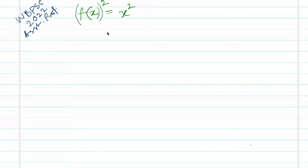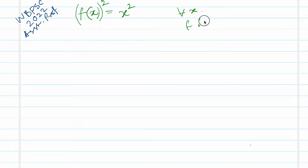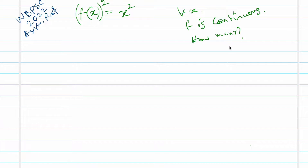Hello everyone. In this video we are going to talk about a really simple but yet tricky problem. The given information is f(x)² = x² for all x, and the function f is continuous. You have to find how many such continuous functions satisfy f(x)² = x². This came in the West Bengal PHD 2022 exam for recruiting associate professors, and this problem is really tricky.